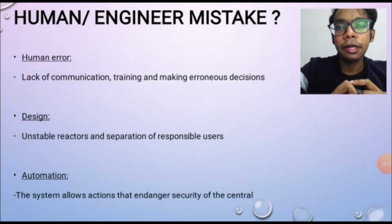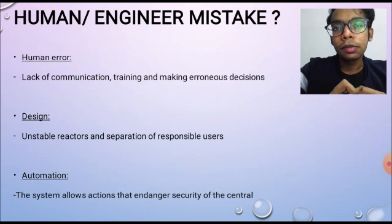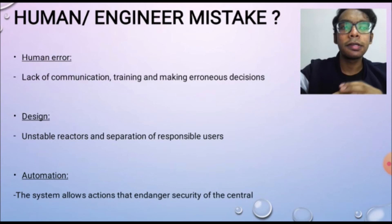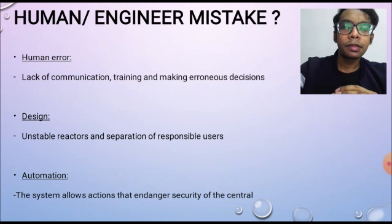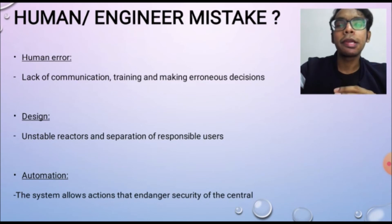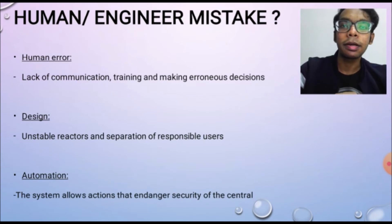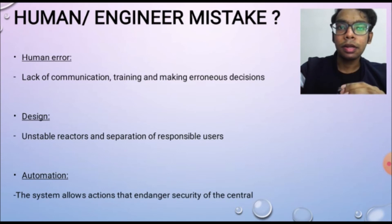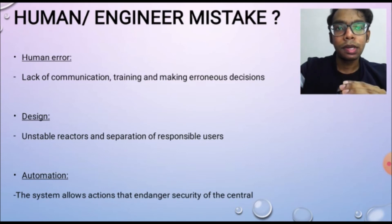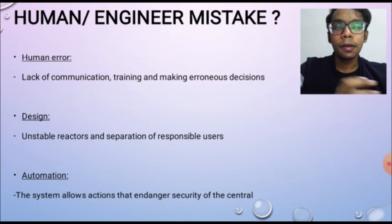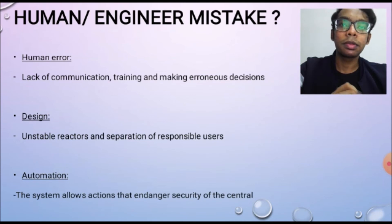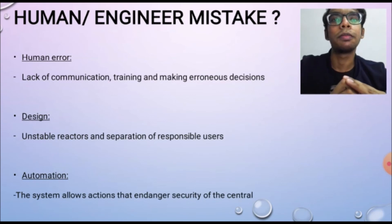Hello everyone, my name is Selva Bharti, metric number EA18048. Today I will discuss human and engineering mistakes. My first point is human error — this is due to lack of communication between the workers and higher-ups, and also workers not receiving proper training, which led to mistakes because they lacked clear instruction or supervision.